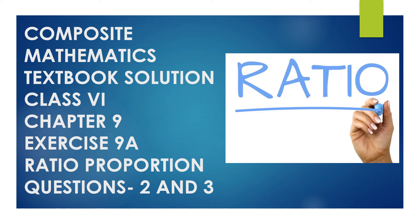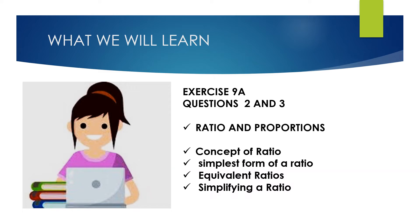Hello everyone, this is Mamita Moon. Today we will learn and solve questions 1 to 10 of exercise 9A, chapter 9. The chapter name is Ratio and Proportion of class 6 of the Composite Mathematics textbook. Topics include concept of ratio, simplest form of a ratio, equivalent ratios, and simplifying ratios.